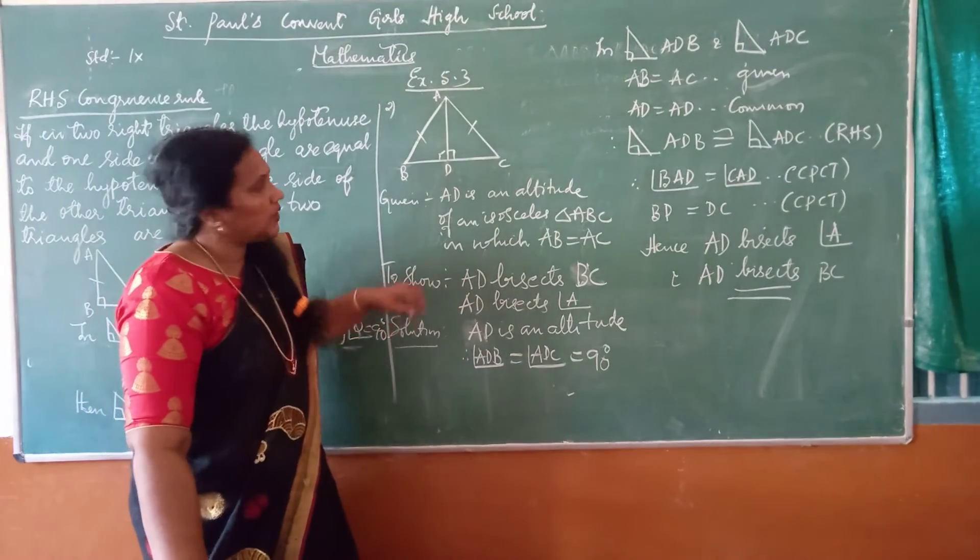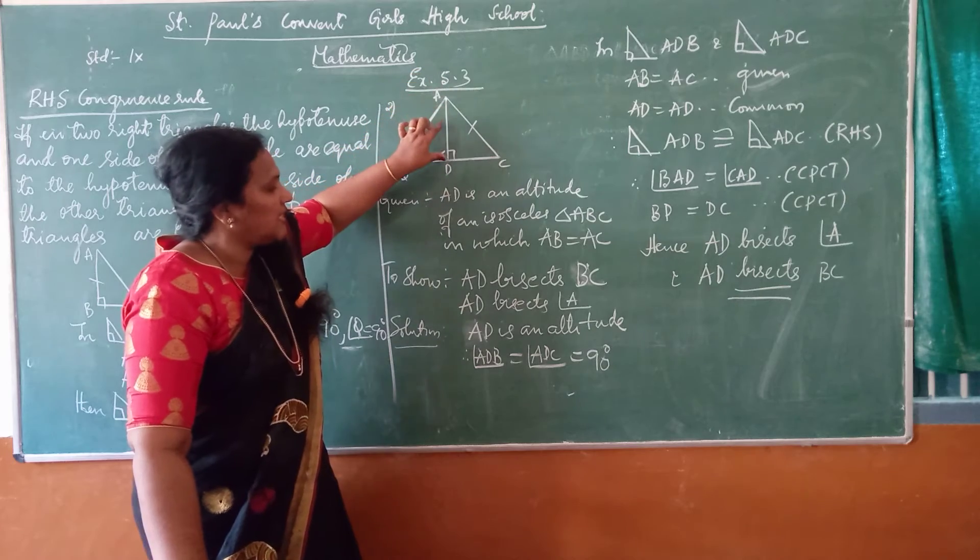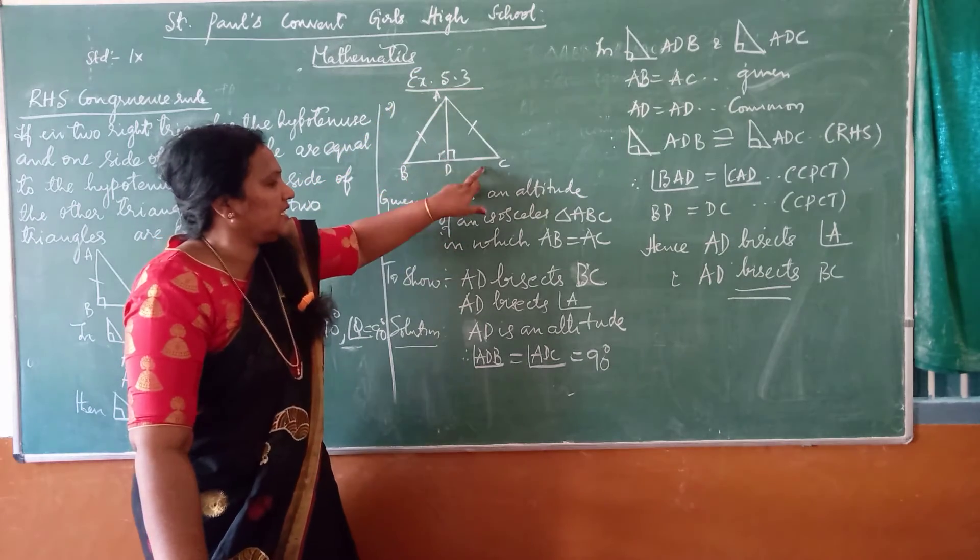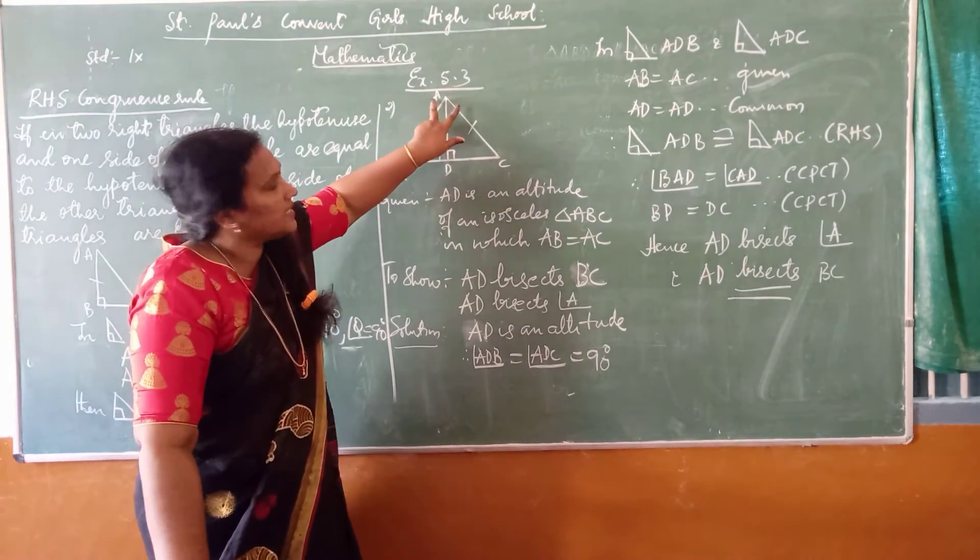Now what I am supposed to show is AD bisects angle A as well as AD bisects BC. This is what I am supposed to show. To show that AD bisects angle A...